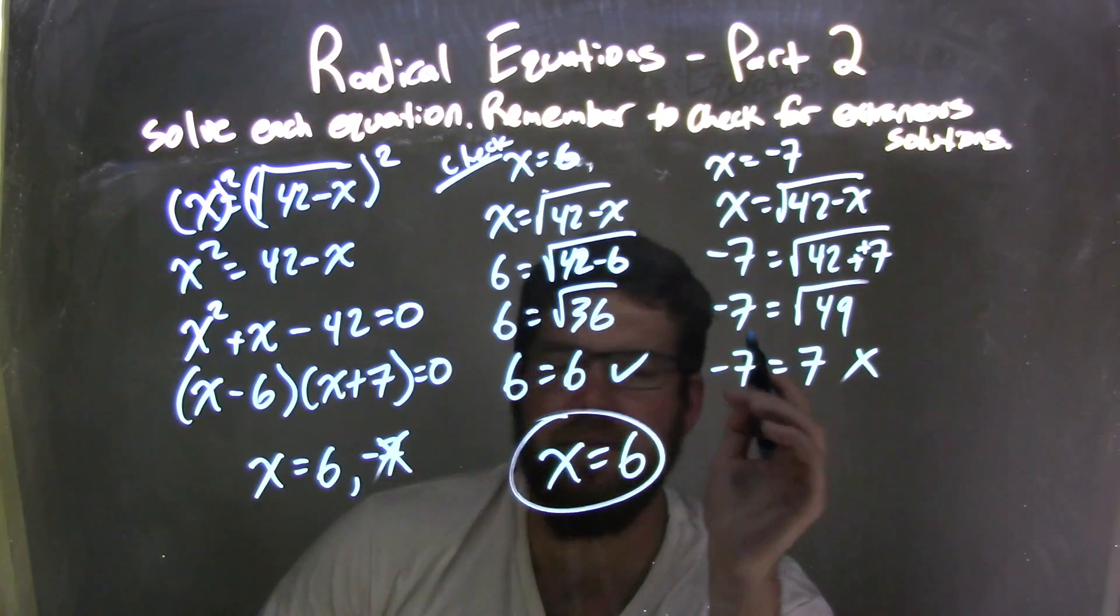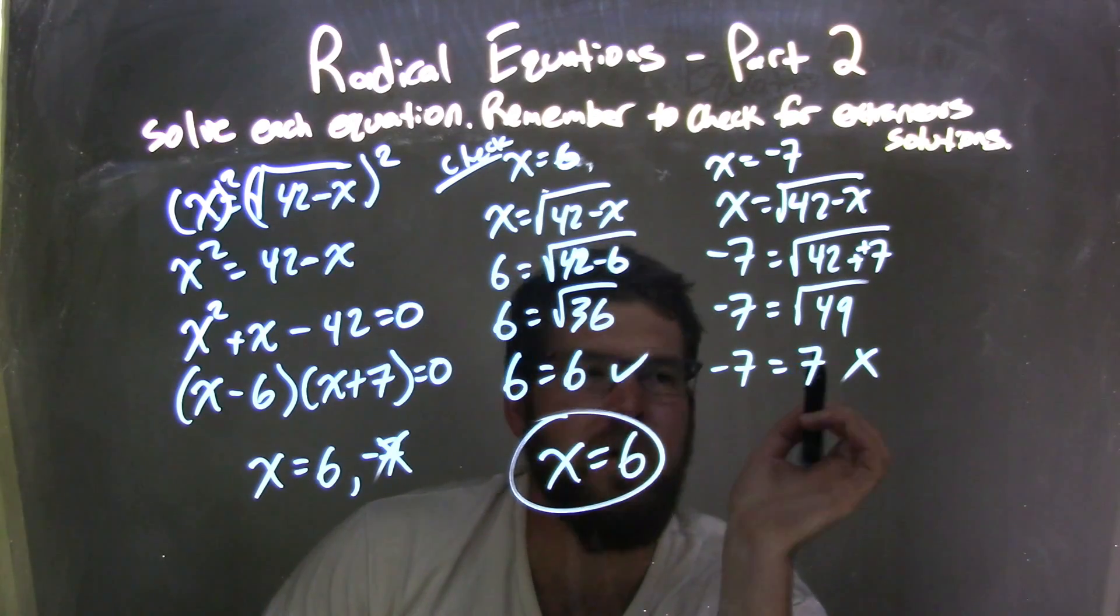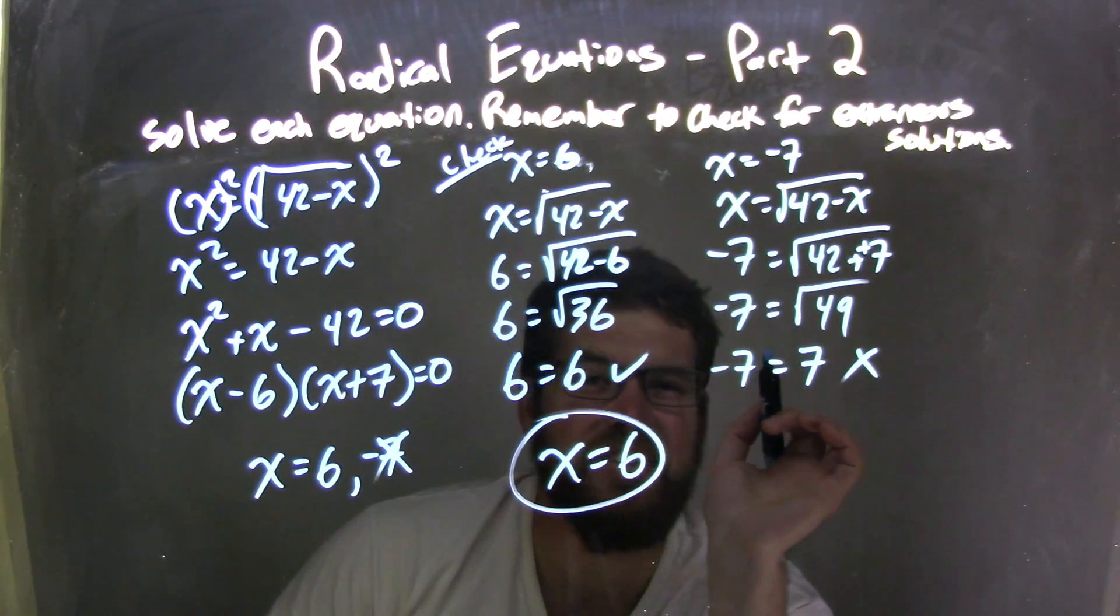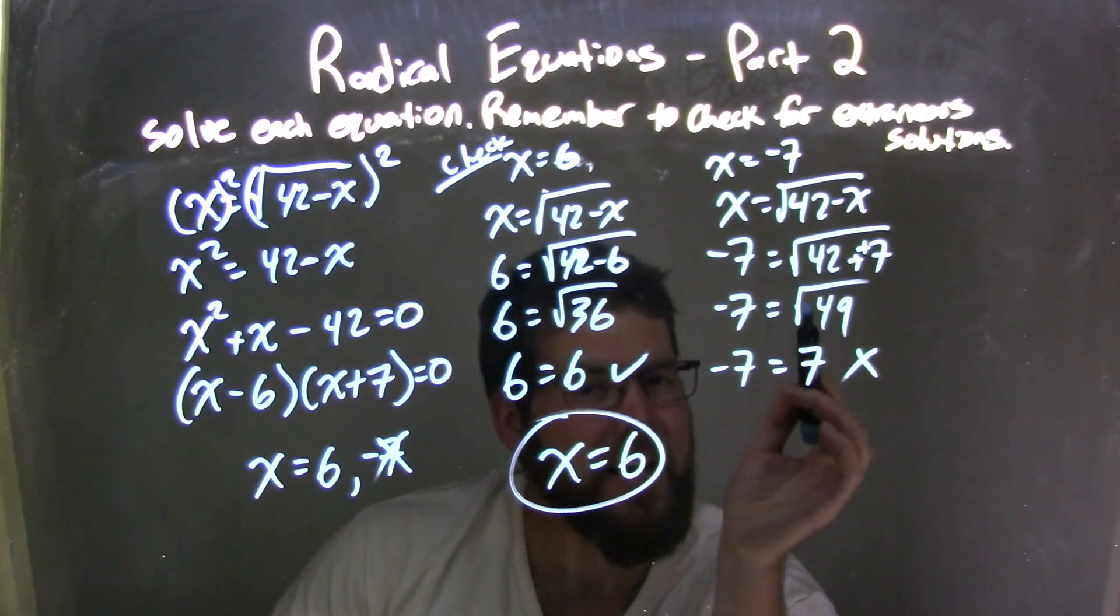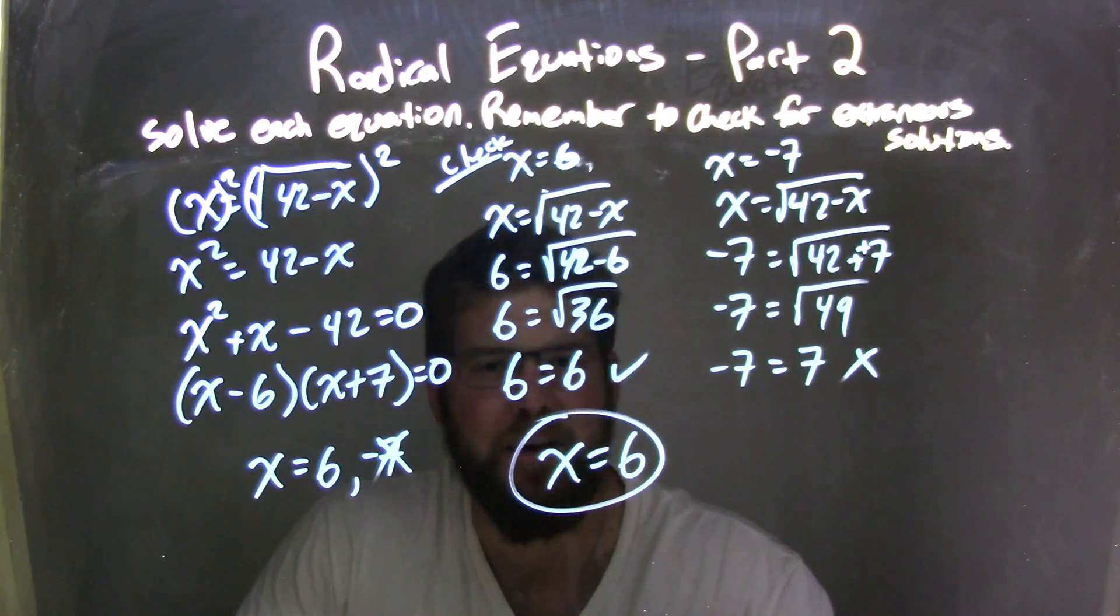Be careful—a lot of students want to eliminate that negative. You can't. Negative 7 and positive 7 are not equal, so that is an extraneous solution. Positive 6 is a real solution, so the final answer is x equals 6.